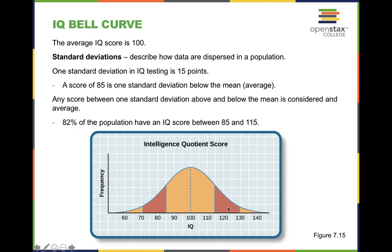If you are two standard deviations above or below the mean, that puts you outside the average range. Individuals with an IQ between 115 and 130 are considered above average. Those between approximately 70 and 84 are below average, and at 70 and below is well below average. Between 130 and above is considered well above average.